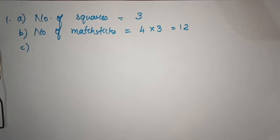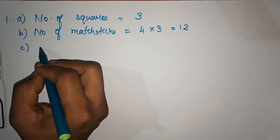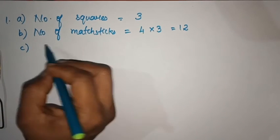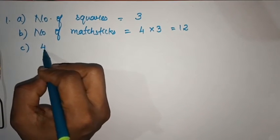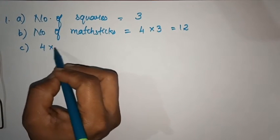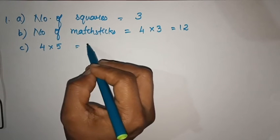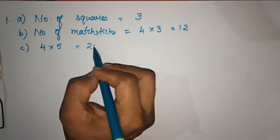How many matchsticks for 5 squares? How many squares you can find? 5 × 4. This is 4. So 5 × 4 = 20.